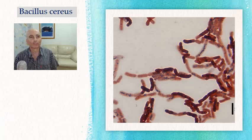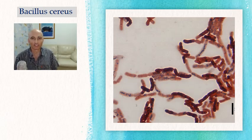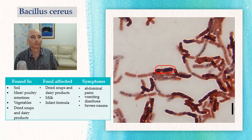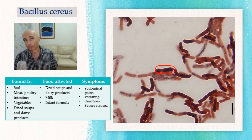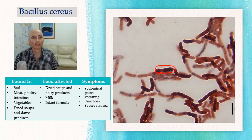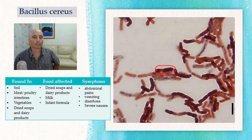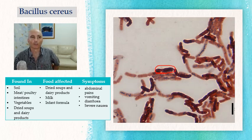First up is Bacillus cereus — you definitely don't want that in your food. It's found in meat and poultry, dried soups, and dairy products. Infant formula is one product where you could find this awful bacteria. Symptoms include abdominal pain, vomiting, diarrhea, and severe nausea. This one you do not want.